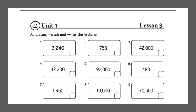Listen, match, and write the letters. Number one: 92,000 — this is 92,000. Number two: 42,000 — this is 43,000. Number three: 2,240 — let us search for it — this is 3,240.